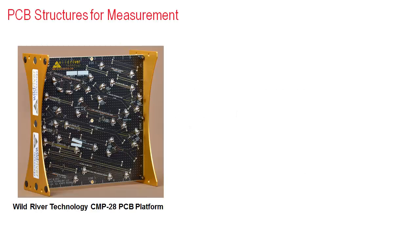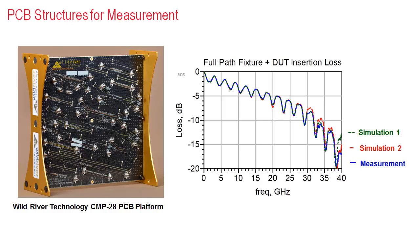Here we have a printed circuit board, or PCB, with connectorized structures for measurement. On the right is a graph of the loss in dB versus frequency out to 40 gigahertz for one of the test structures. The solid blue line of measured data clearly shows the increasing loss versus frequency that degrades the transmitted signal. The red and green dash traces show how simulation can match measurement down to the last ripple out to 40 gigahertz and is the focus of this video.